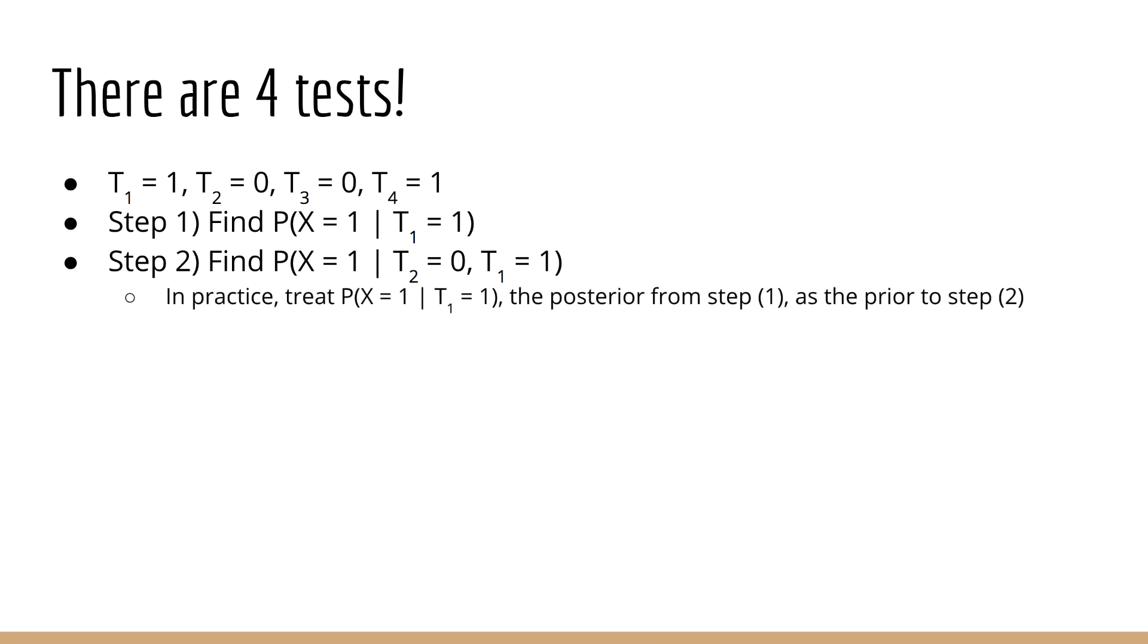What makes this problem a little more complicated is that there are four tests. So, in fact, we have t1 equals 1, t2 equals 0, t3 equals 0, and t4 equals 1. Our strategy for solving this problem will be this. First, we're going to calculate p of x given t1 equals 1 using Bayes' rule as described on the previous slide. Next, we need to calculate p of x given t2 equals 0, and t1 equals 1. This looks complicated mathematically, but in practice, it's simple. What we do is, although p of x given t1 is the posterior from the first step, it becomes the prior in the second step. Thus, on the second step, all we need to do is apply Bayes' rule again using our new prior.